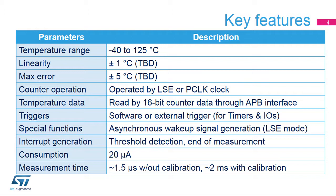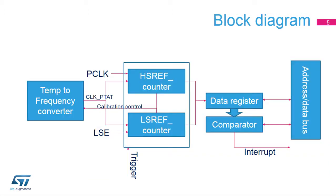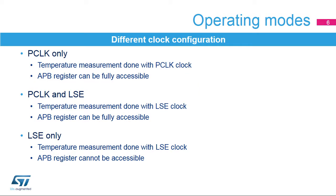There are also several different methods to trigger the measurement. The temperature watchdog function can generate interrupts or wake-up signals. This is the general block diagram for the digital temperature sensor embedded in the STM32MP1 device. The digital temperature sensor has three operating modes, depending on the clock source selected to operate the temperature measurement.